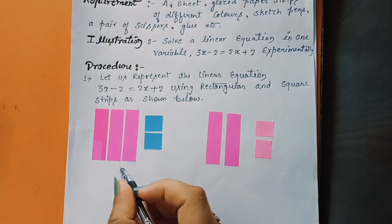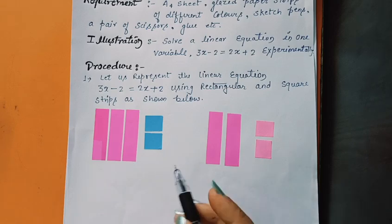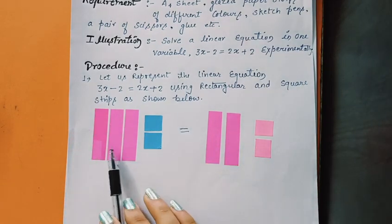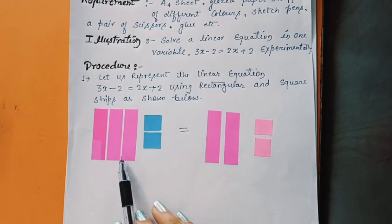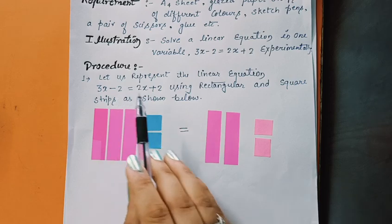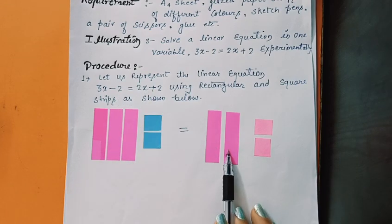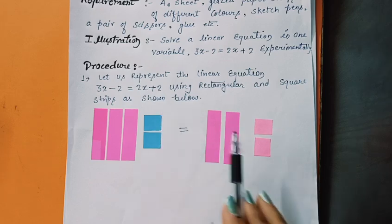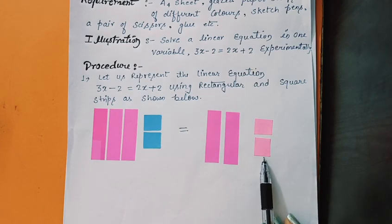So these rectangular and square pieces of paper represent this linear equation. So 3x, 3 rectangular paper strips and this blue color represents negative part and 2x, this 2 positive and rectangular pieces of paper and this plus 2 represents the square paper of pink color.